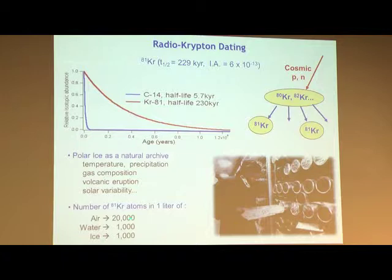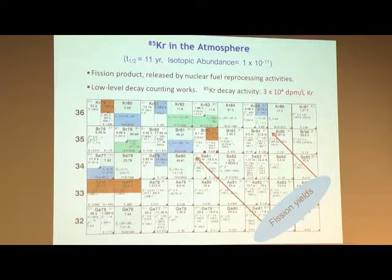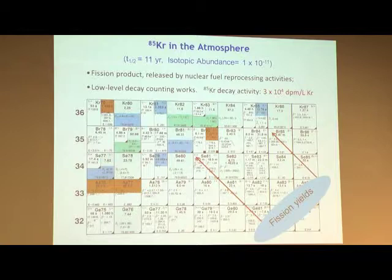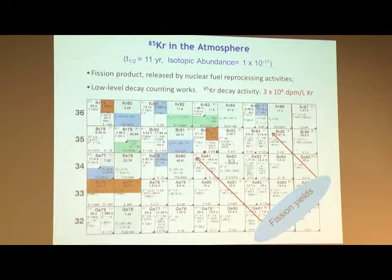To do krypton-81 dating, one must overcome two technical challenges. First, the isotope ratio of krypton-81 is very low: 6×10⁻¹³ in the atmosphere, and for old samples, 10⁻¹⁴ to 10⁻¹⁵. Second, there are not many krypton-81 atoms in a sample — about 20,000 in a liter of air, and about 1,000 in a liter of water or ice. Whatever counting method you use must be very efficient. Krypton-85, with only an 11-year half-life, is actually more abundant at 10⁻¹¹ because it's a fission product.